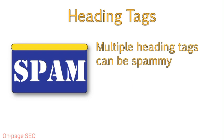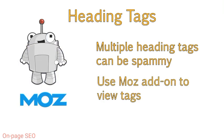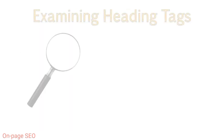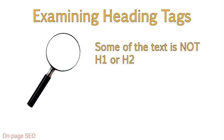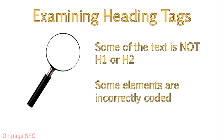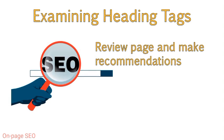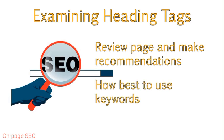Don't include multiple, unnecessary heading tags on one page just to include keywords, as this can make a page appear spammy. You can view what elements of the page are H1 and H2 tags by viewing the source code or by using a browser add-on. When you start examining headings of a page, you will often find that a portion of text that looks like it should be in H1 or H2 is not. You may also find that some elements of the page are coded as a heading when they really shouldn't be. Our job as SEOs is to review the page and make recommendations on where to adjust the heading tags and how to best incorporate keywords into the heading tags where possible.